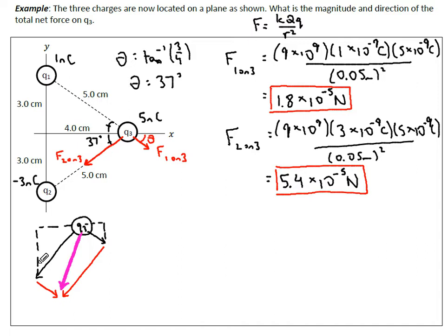So the sum of the forces in the x direction: we look at F1 on 3, that's to the right so we think of right as positive and up as positive. F1 on 3 is pushing to the right, so it's going to be a positive 1.8 times 10 to the negative 5 Newtons times cos 37, because that's the angle it's acting in.